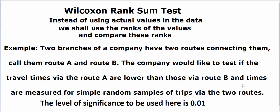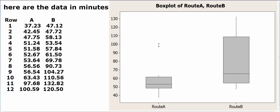And what they do is that they take simple random samples of trips that have been taken by using the two routes. And the level of significance that we are being given here is 0.01. So if the p-value is less than 0.01, we will reject the null and conclude that the travel times via route A are lower than those via route B.